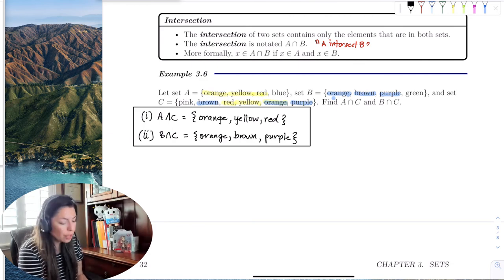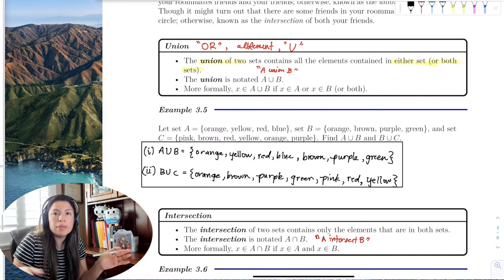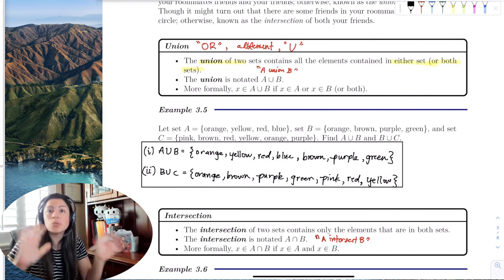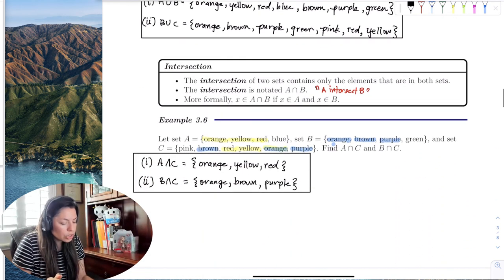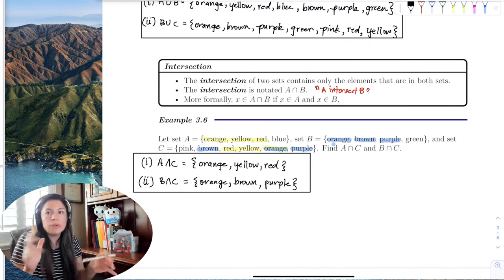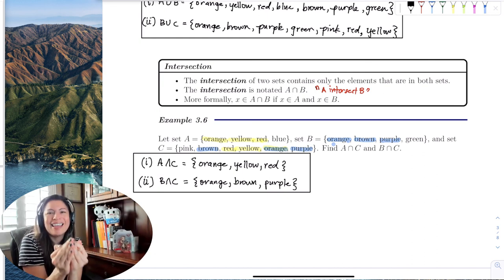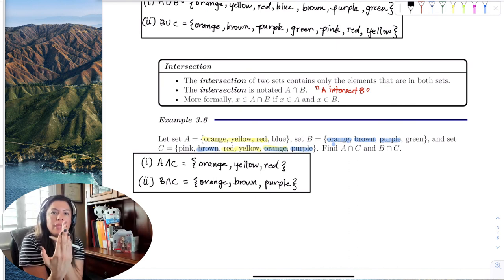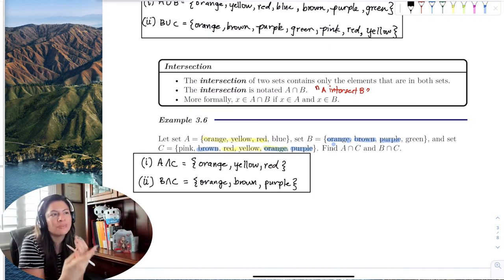To recap: the union contains elements that can be in one set or the other or in both — wherever it is, all together. The intersection is more specific: it's the common friends between your roommate and yourself. An element in the intersection has to be in both sets. So the intersection is a little more strict.